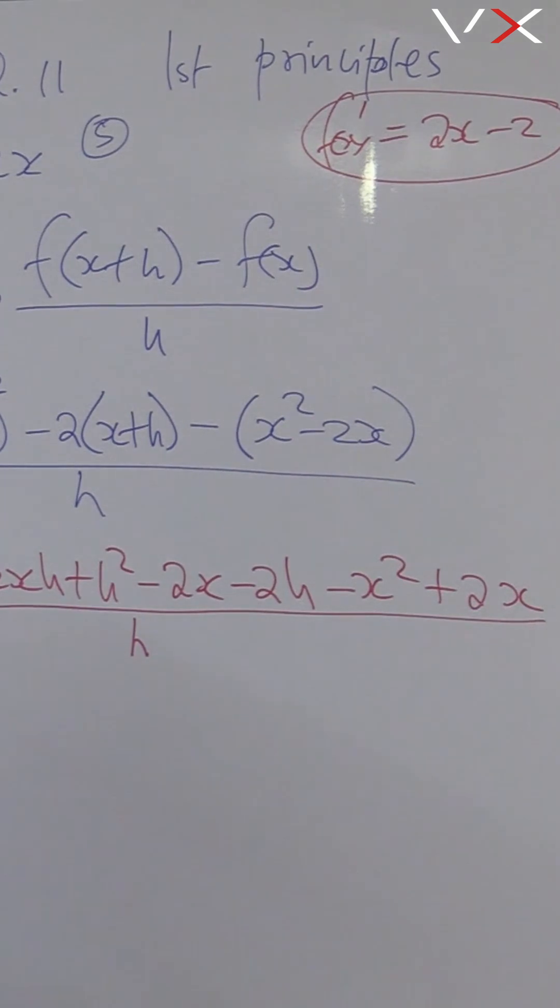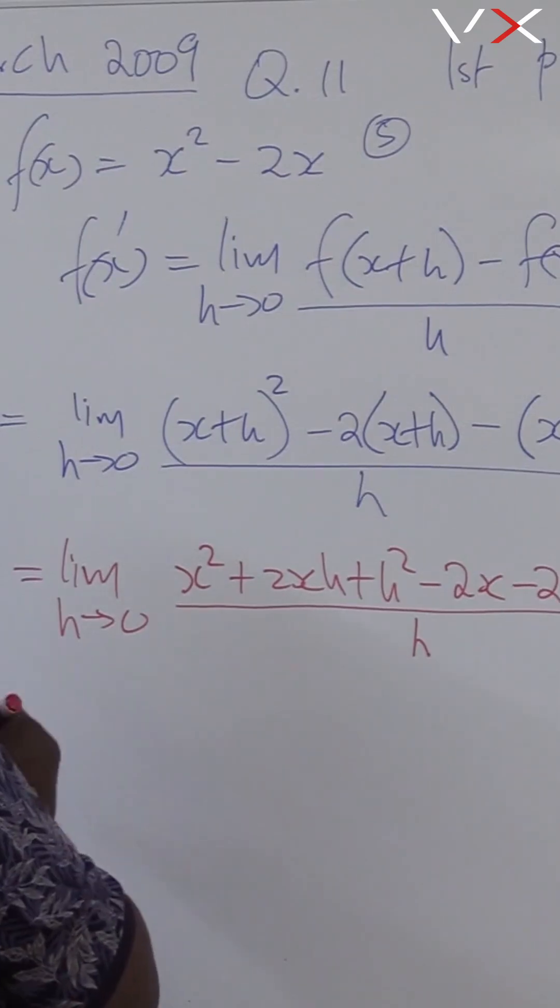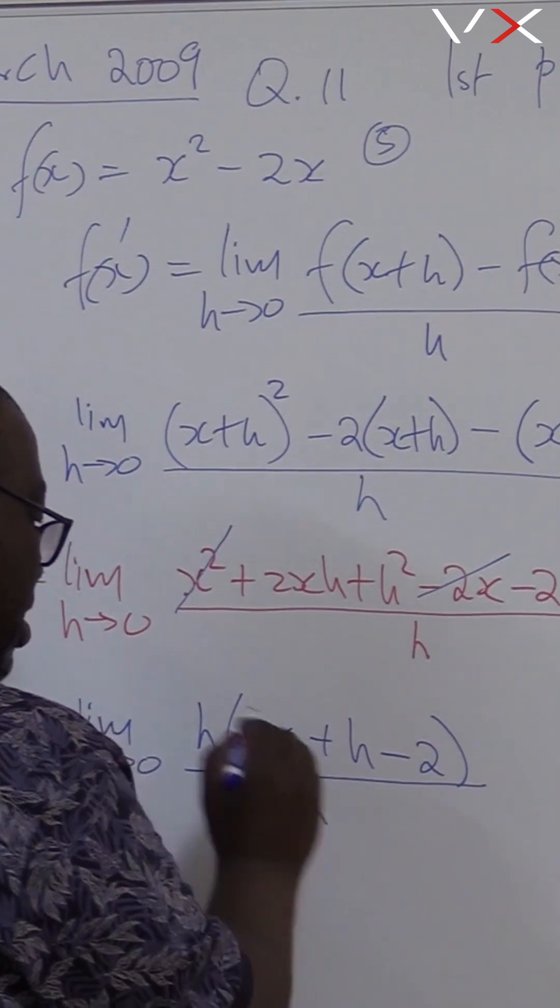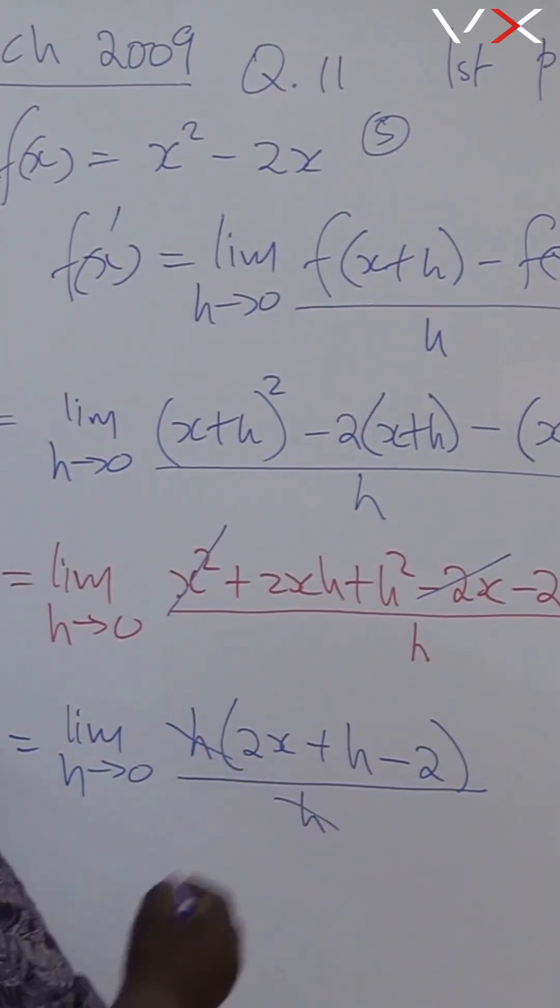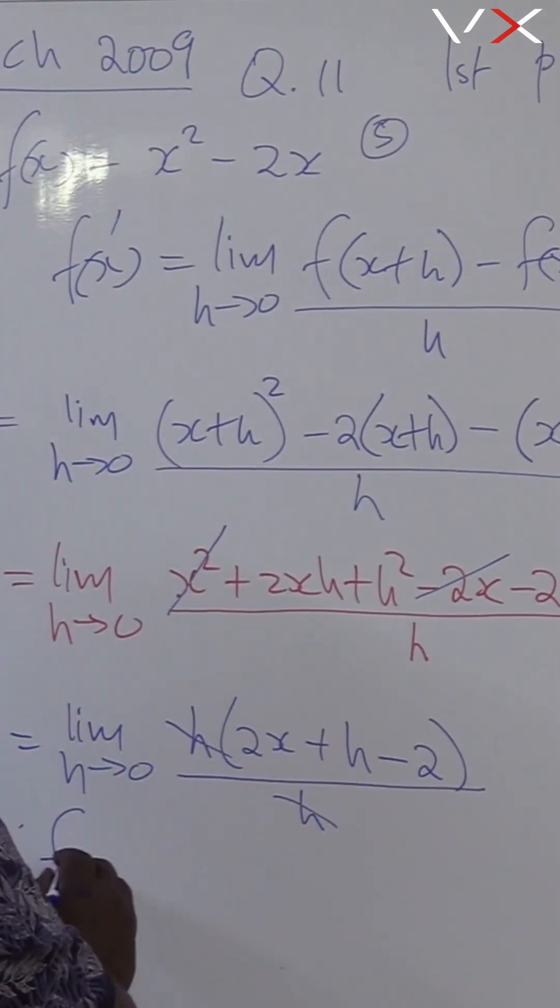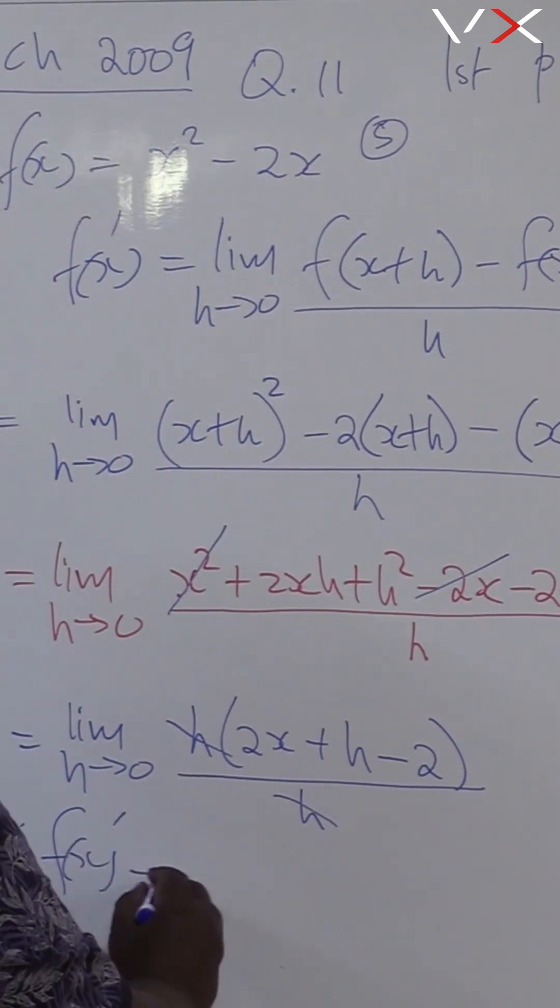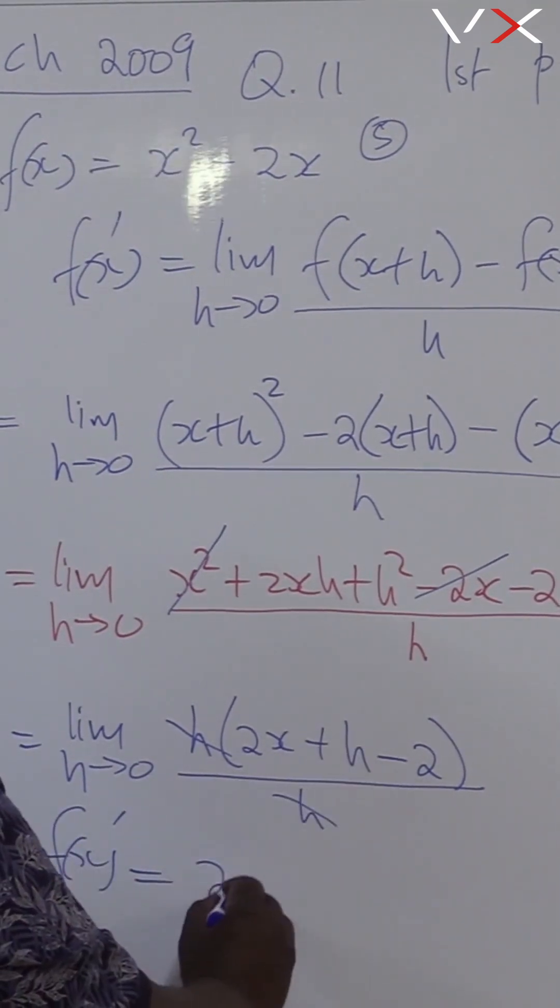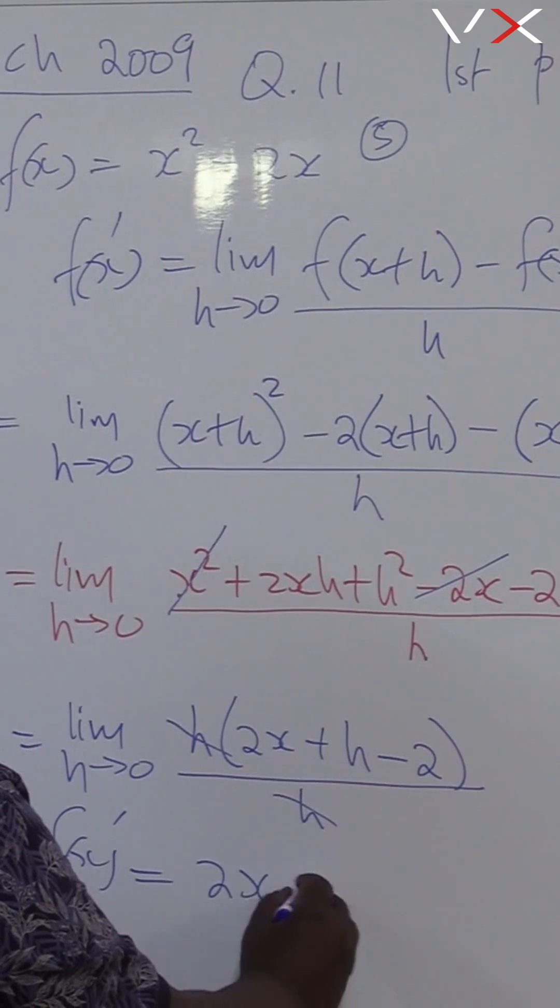This is our f of x prime. Let's continue. This is all over h. You can see that that divided there once. Therefore, f of x prime will be equal to, I will be left with, 2x minus 2.